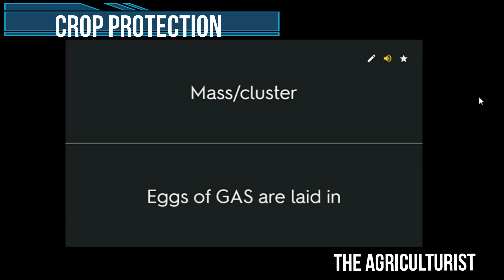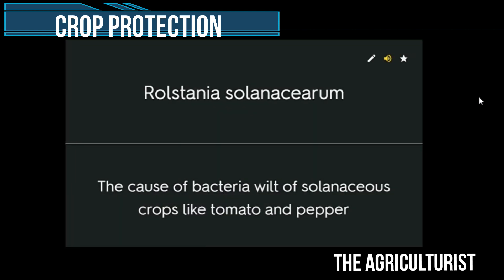Mass cluster — eggs of GAS are laid this way. Ralstonia solanacearum — the cause of bacterial wilt of solanaceous crops like tomato and pepper.